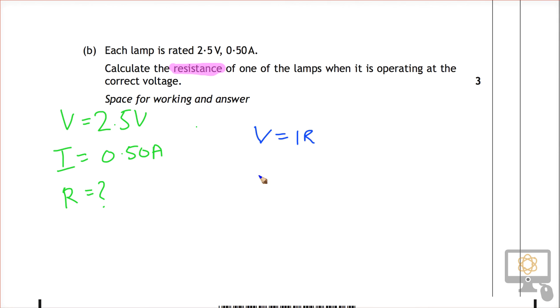So 2.5 is the voltage and that's equal to the current 0.50 times the resistance. We're trying to find the resistance, and 2.5 divided by 0.5 will give you R.